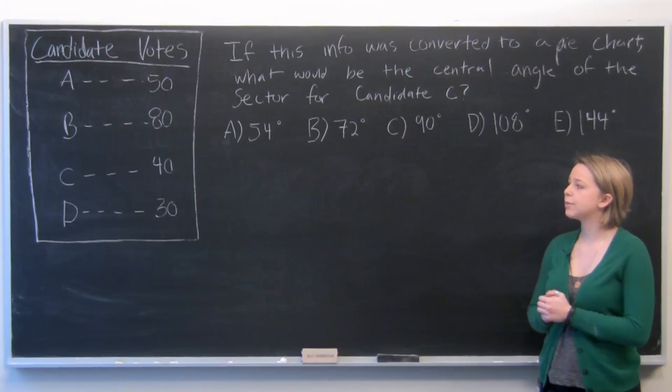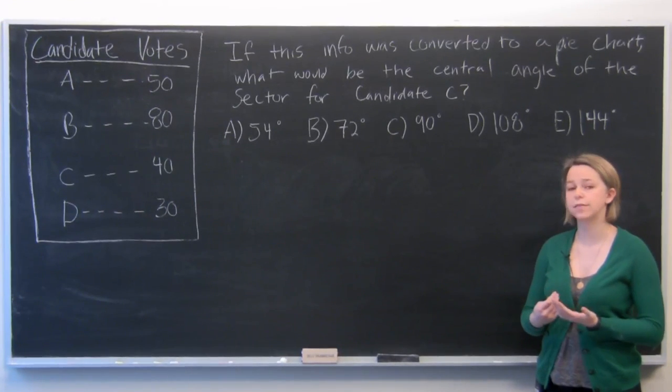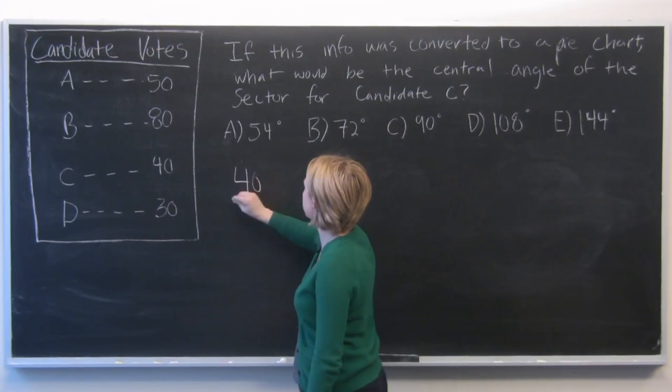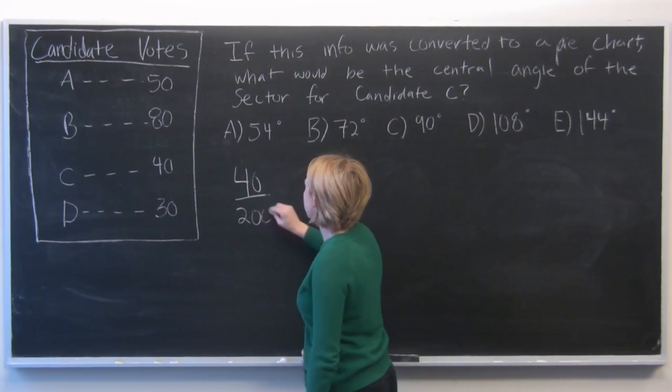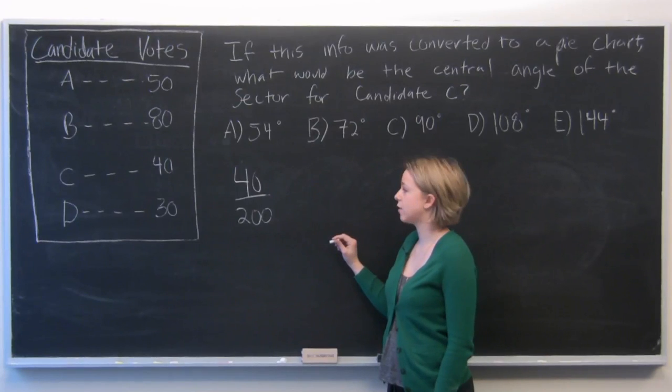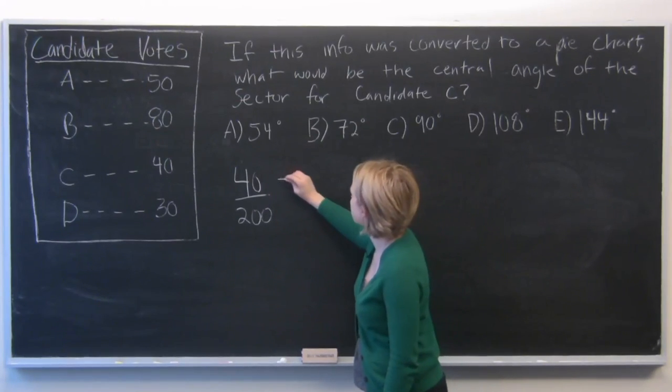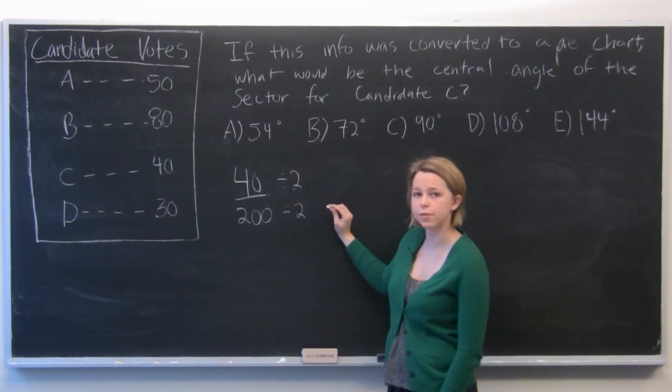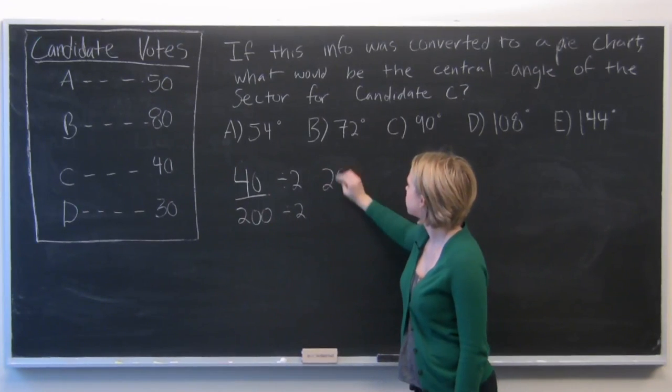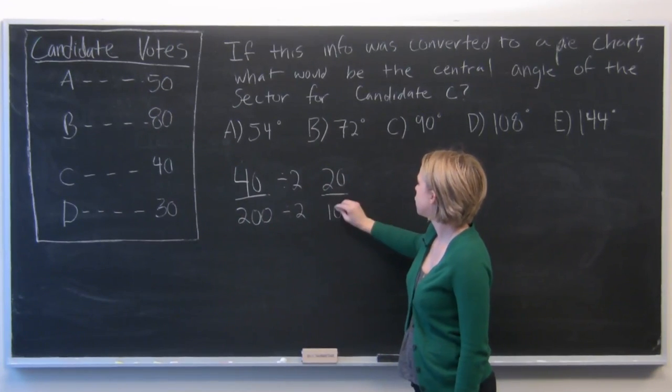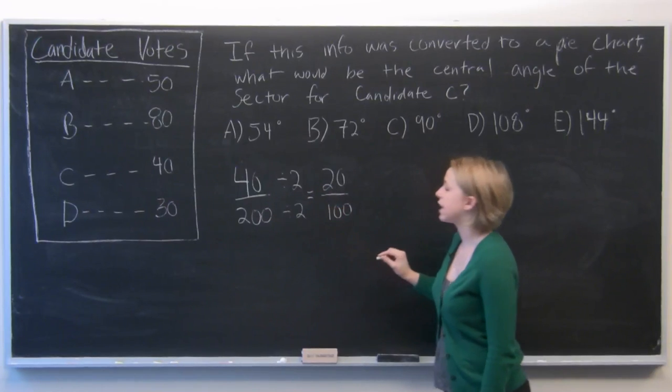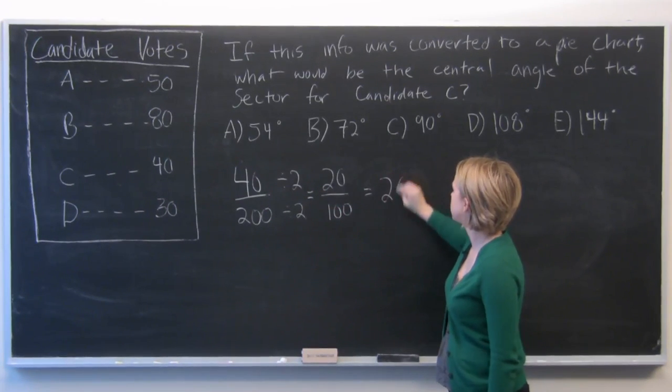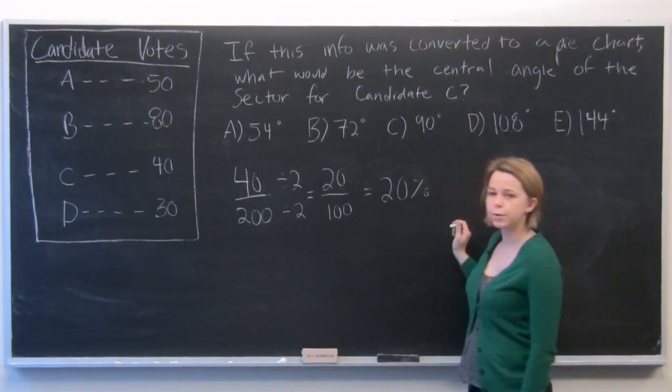So the first thing we need to do is determine what percentage of the vote candidate C got. We know that he received 40 votes out of 200 total. And if we divide both the top and bottom of the fraction by two, we see that he got 20 votes out of every 100, which translates to 20% of the vote.